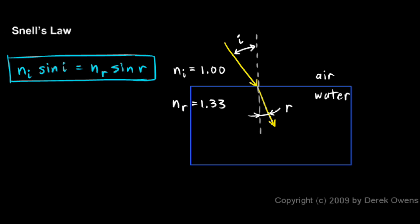Just remember what the different pieces of that equation are. I is the incident angle, so you have the sine of the incident angle, and R is the refracted angle, so you have the sine of the refracted angle.